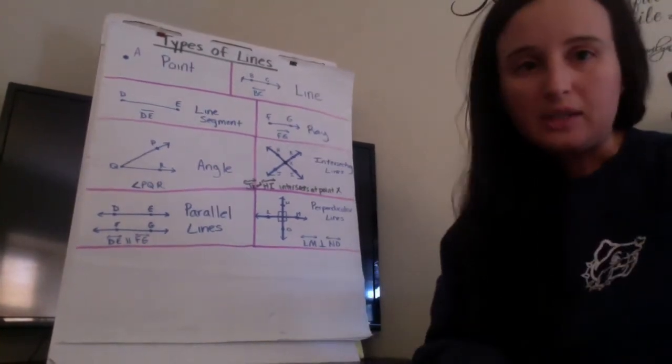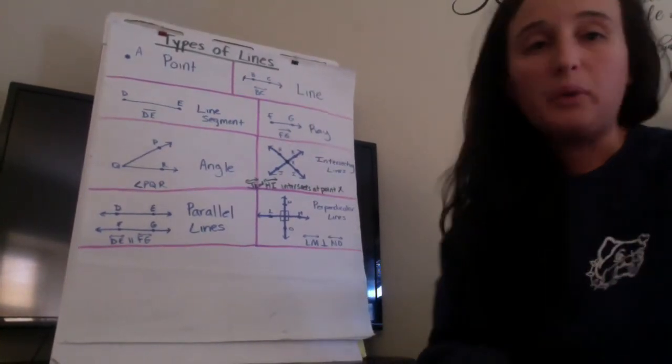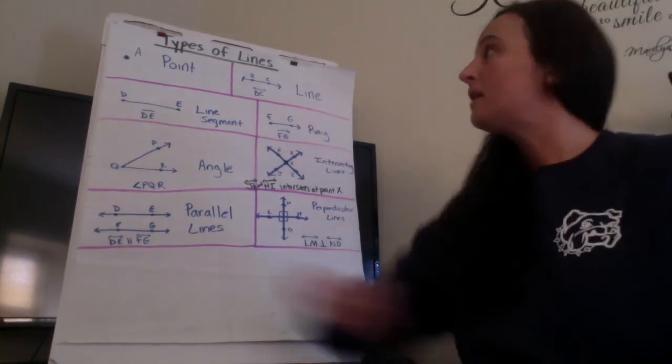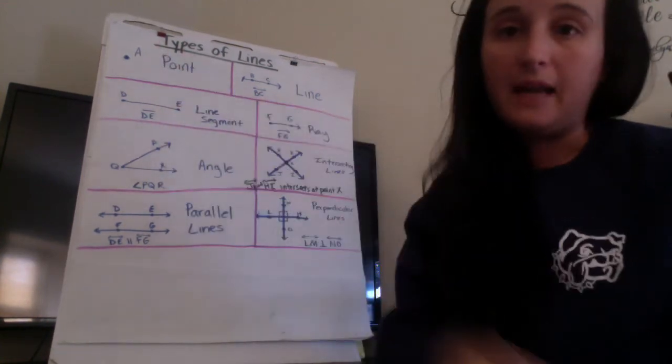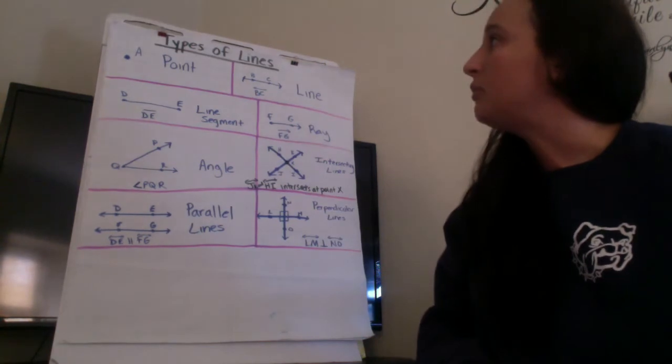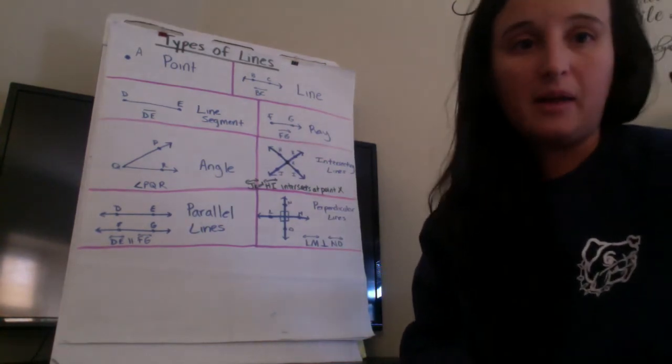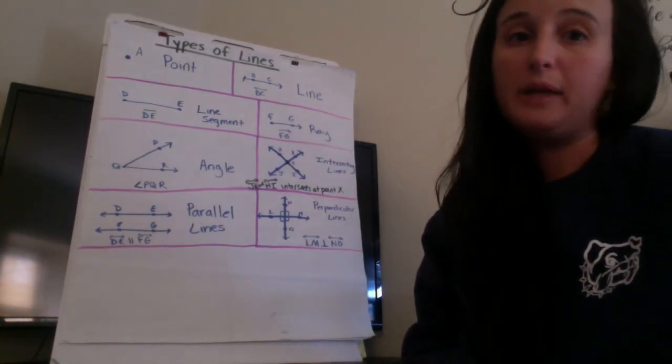So one of the first things we talked about was what a point is. A point is a place on a line and it usually has some type of label that's a letter to help us name the point and the lines.